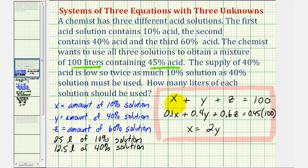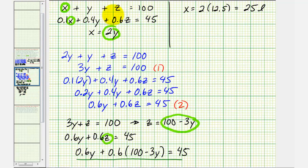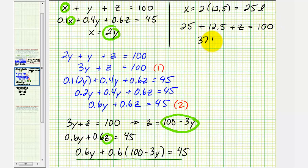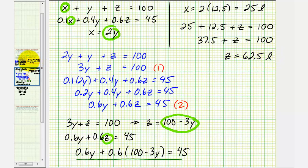Finally, we know that x plus y plus z must equal 100. Using the first equation, we have 25 plus 12.5 plus z equals 100. That gives us 37.5 plus z equals 100. Subtracting 37.5 from both sides, z equals 62.5, which is the number of liters of 60% solution.